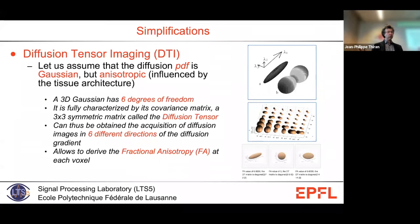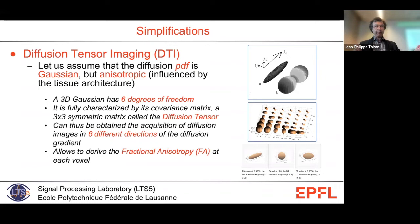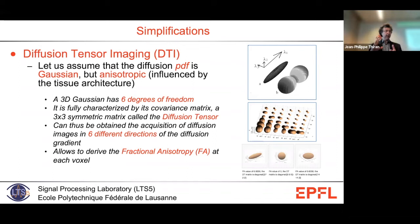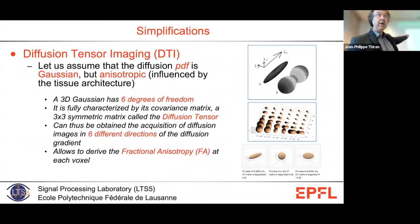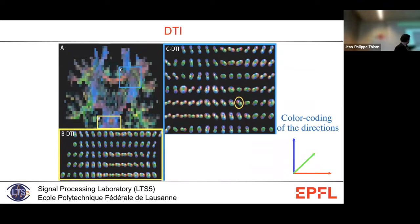What has traditionally been done is to measure for the whole volume in six independent directions. Why six? Because if you assume the diffusion is Gaussian at every point, it is parameterized by the covariance matrix in 3D — a 3×3 symmetric positive semi-definite matrix with six independent values. By measuring diffusion in six independent directions, you can fit those six values. This is what is called diffusion tensor imaging, DTI — you measure the Gaussian approximation of the PDF at every point.